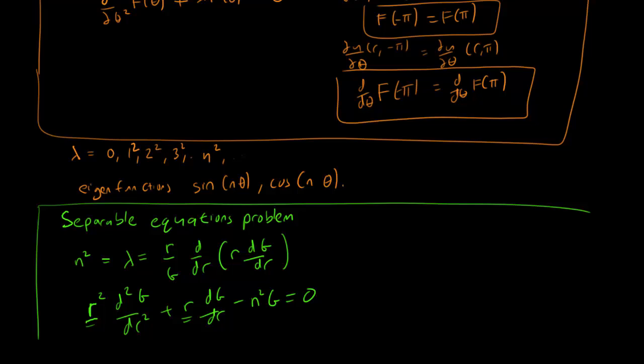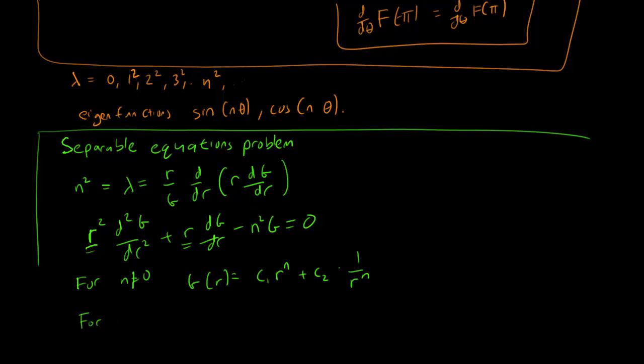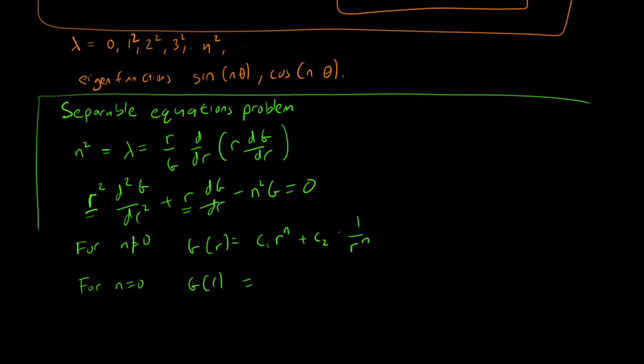I'm just going to give you the answer, and it's going to be, for n not equal to 0, g equals c1 r^n plus c2 1 over r^n. The two linearly independent solutions are going to be r^n and 1 over r^n. And for the case where n equals 0, we have instead g(r) equals c1 plus c2 times log r.